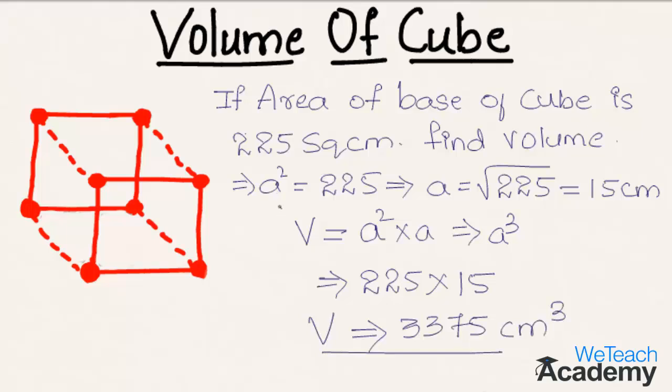At last we can conclude this by saying volume of a cube is given by the formula area of base into height, that implies we get a cube cubic units as the formula for volume of a cube. This was the basic introduction on volume of a cube.